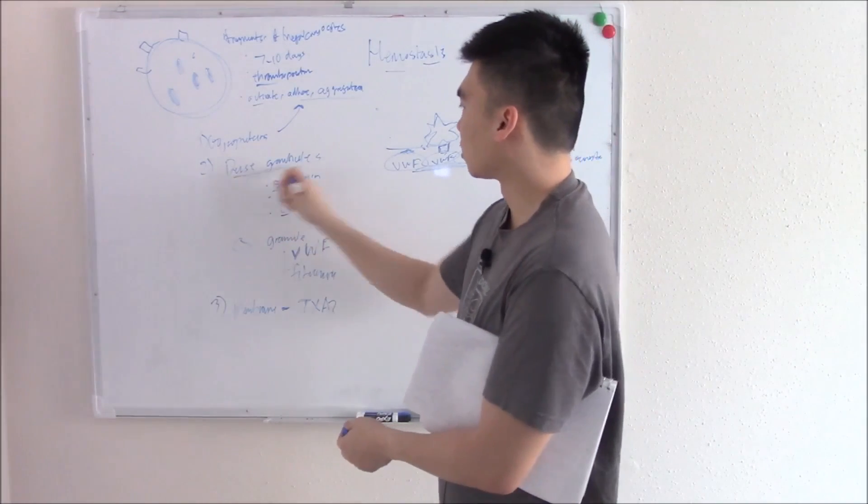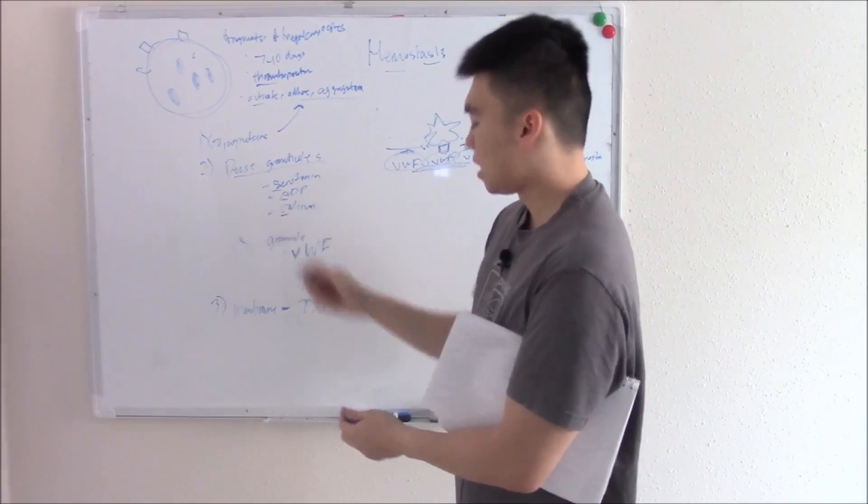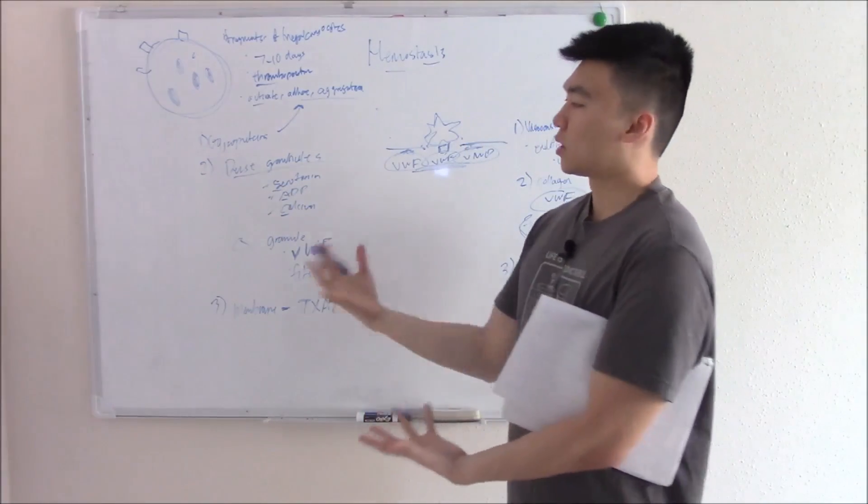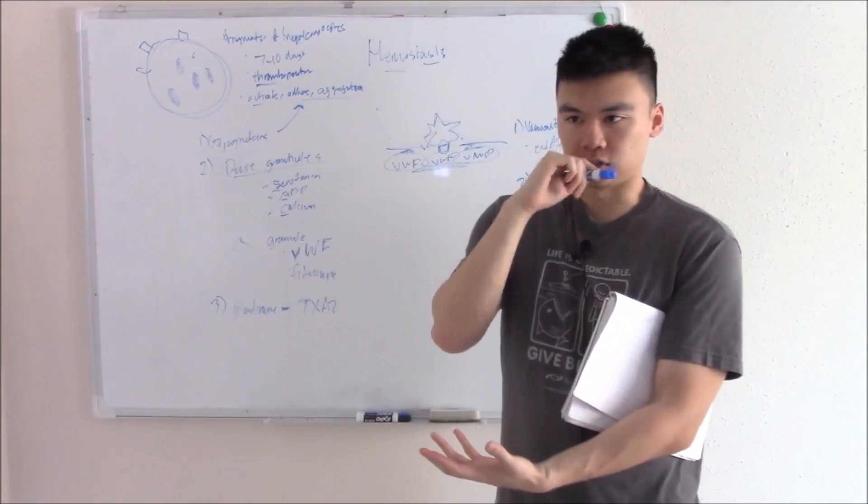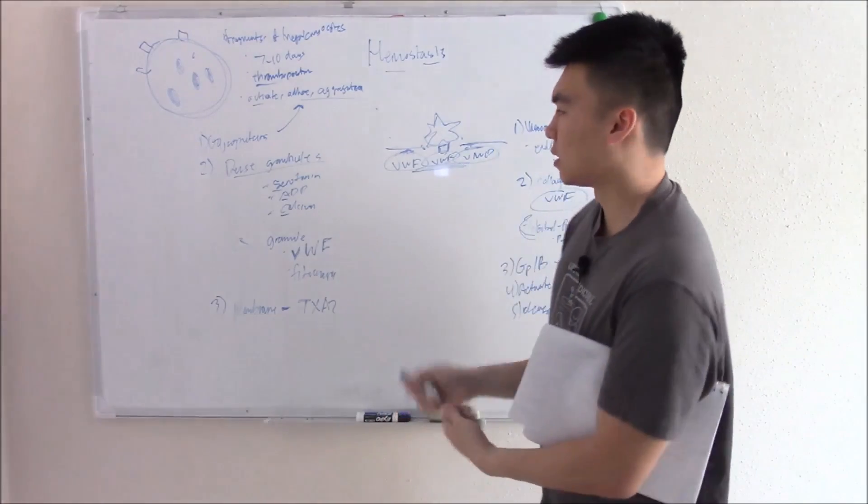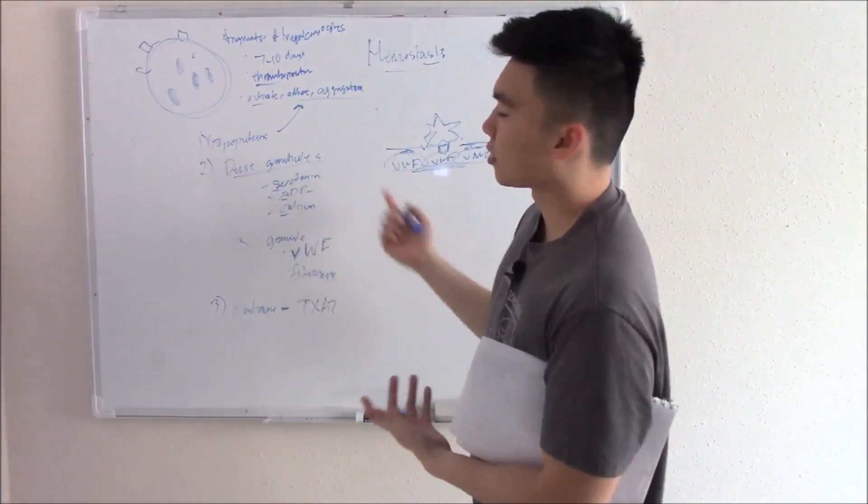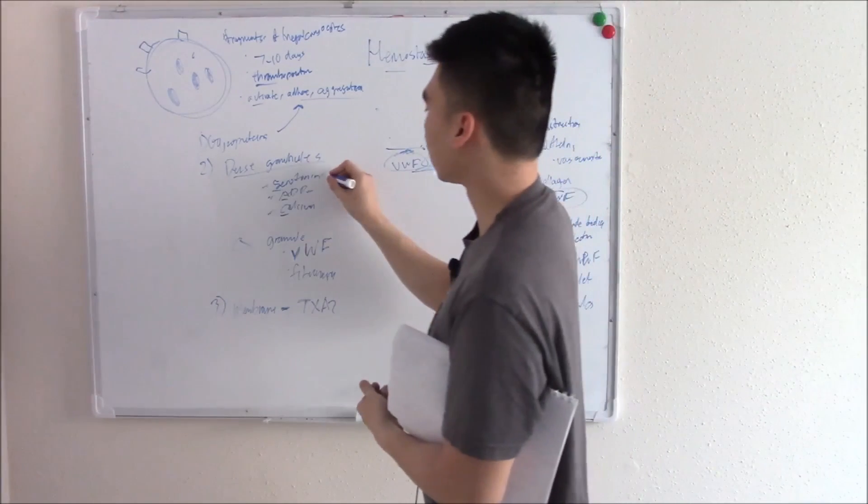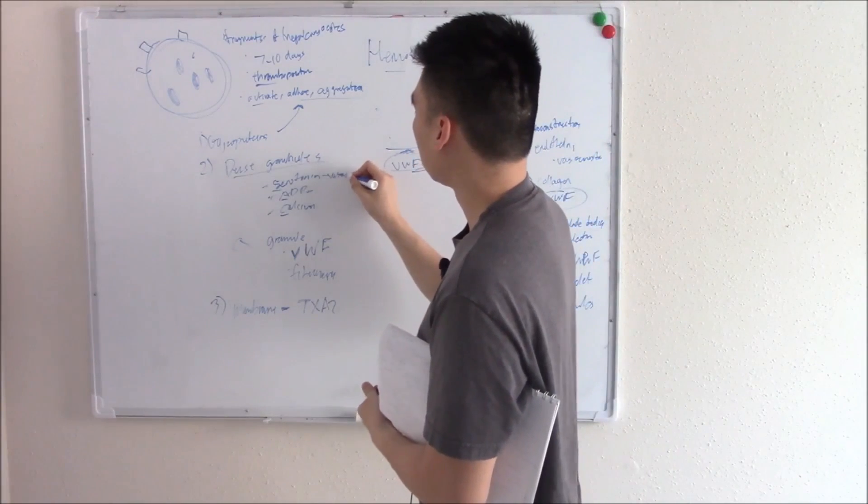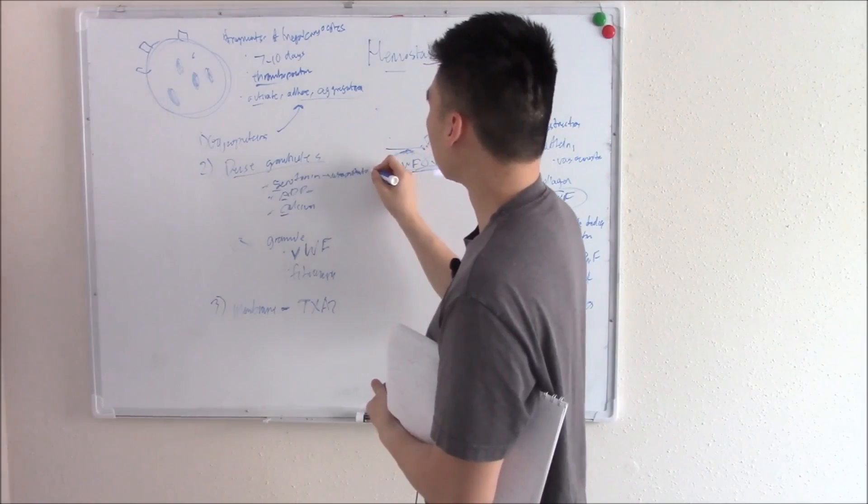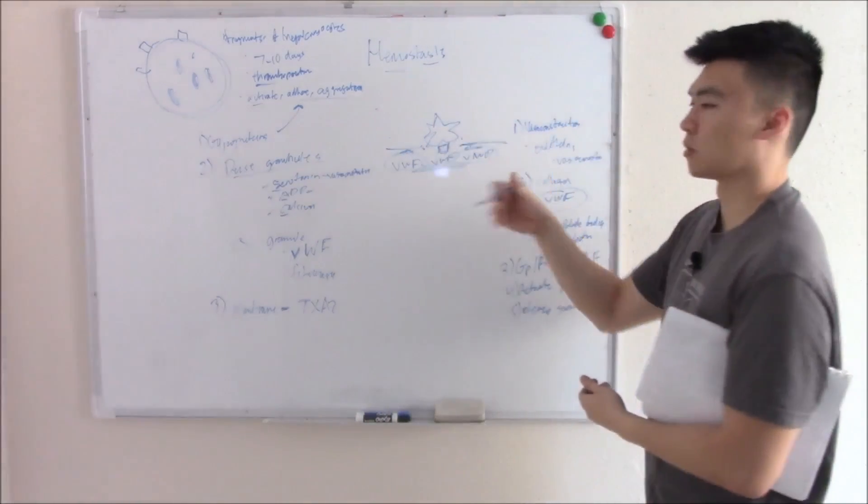We have our dense granules releasing serotonin, ADP, calcium. I found a very helpful memory aid: past, present, future. Serotonin would be the past. Serotonin causes vasoconstriction. We call it the past because vasoconstriction was our first step, so we're kind of in the past.